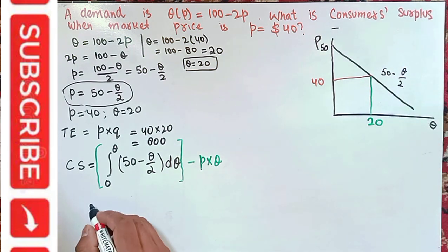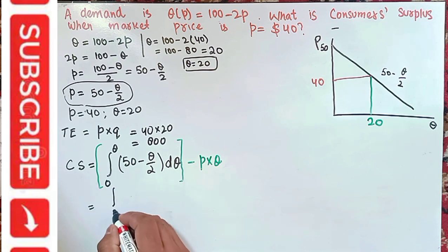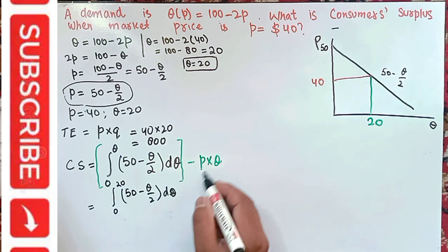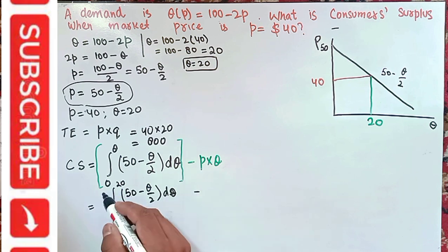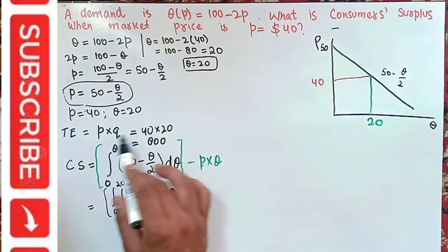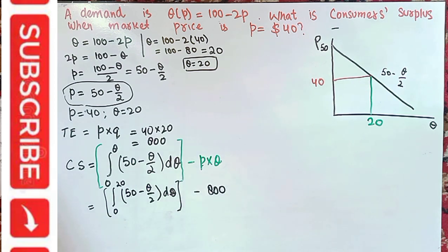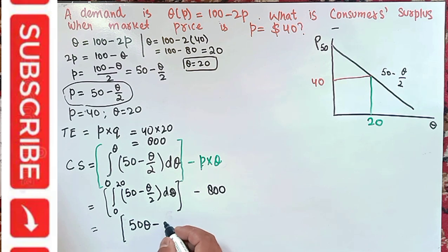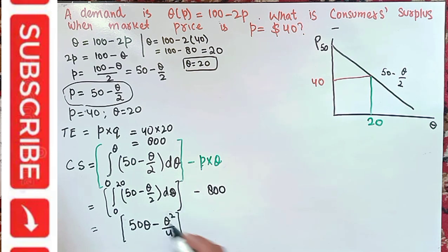Now we solve the integral. We have: integral from 0 to 20 of (50 minus q/2) dq, minus 800. Integrating term by term: the integral of 50 is 50q, and the integral of q/2 gives q squared divided by 4. So we get [50q minus q²/4] evaluated from 0 to 20, minus 800.